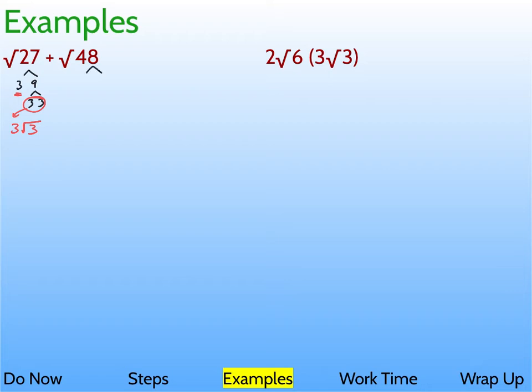Let's try 48. 48 is 16 times 3. 16 is 4 times 4. Oh, cool. Look at this. We got a pair of 4s, which means a 4 comes outside. And we have a 3 left over, which is great because we had a 3 left over last time. And that simplifies to 4 radical 3.